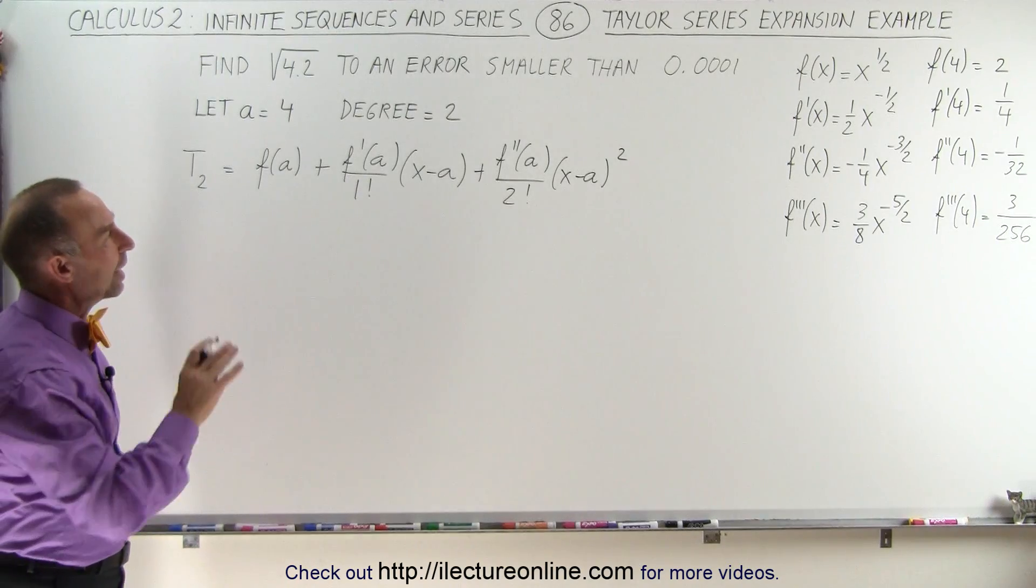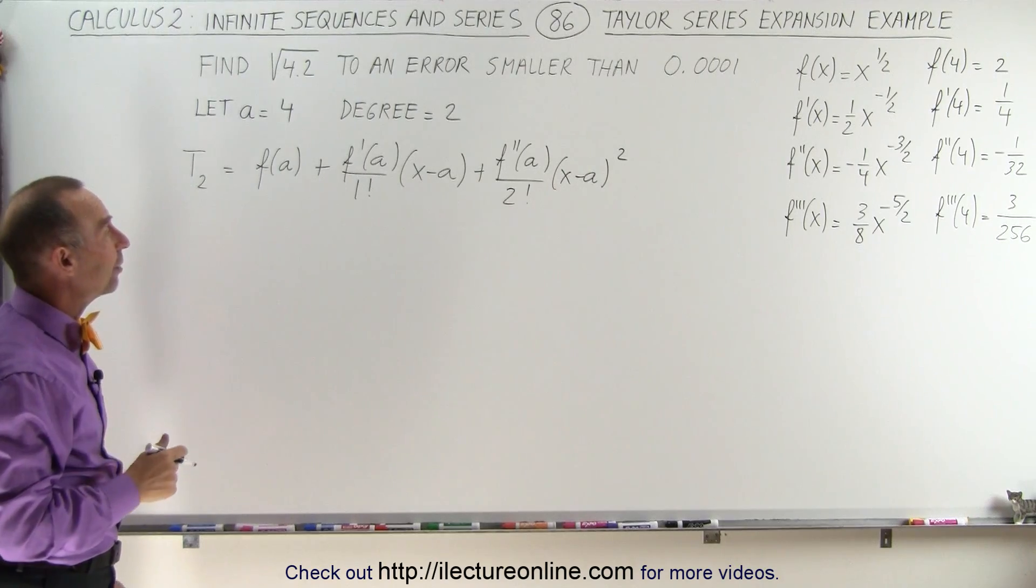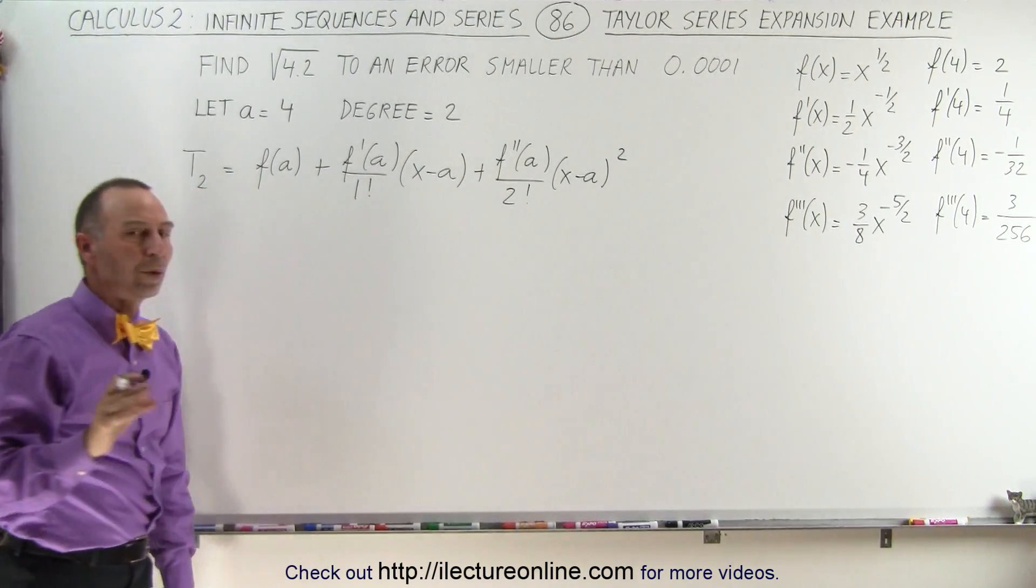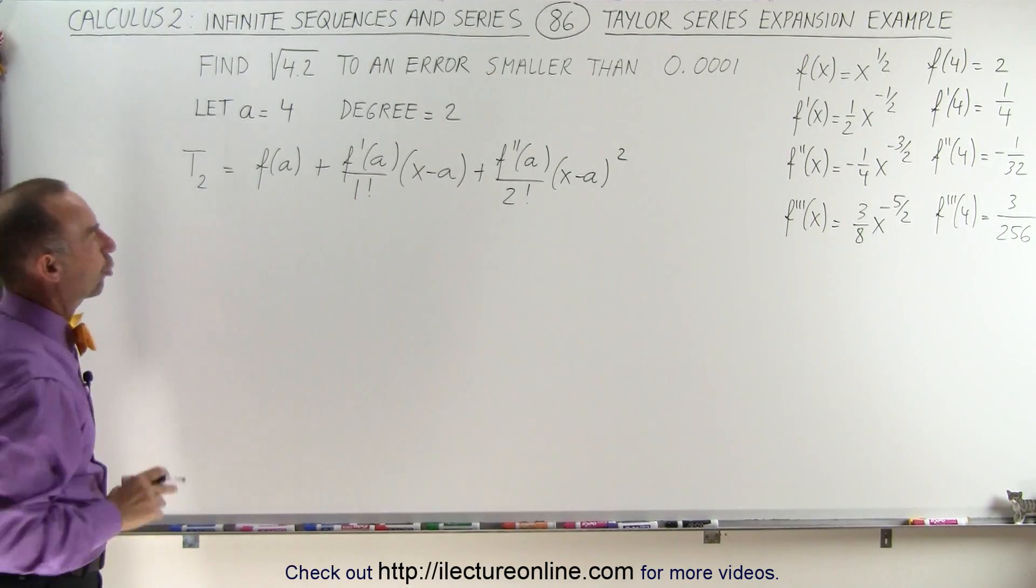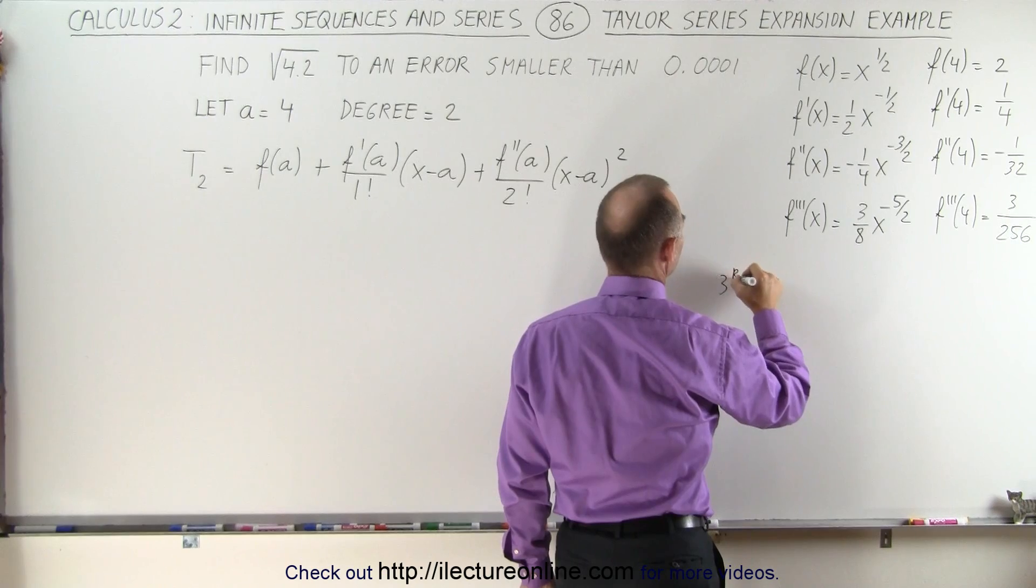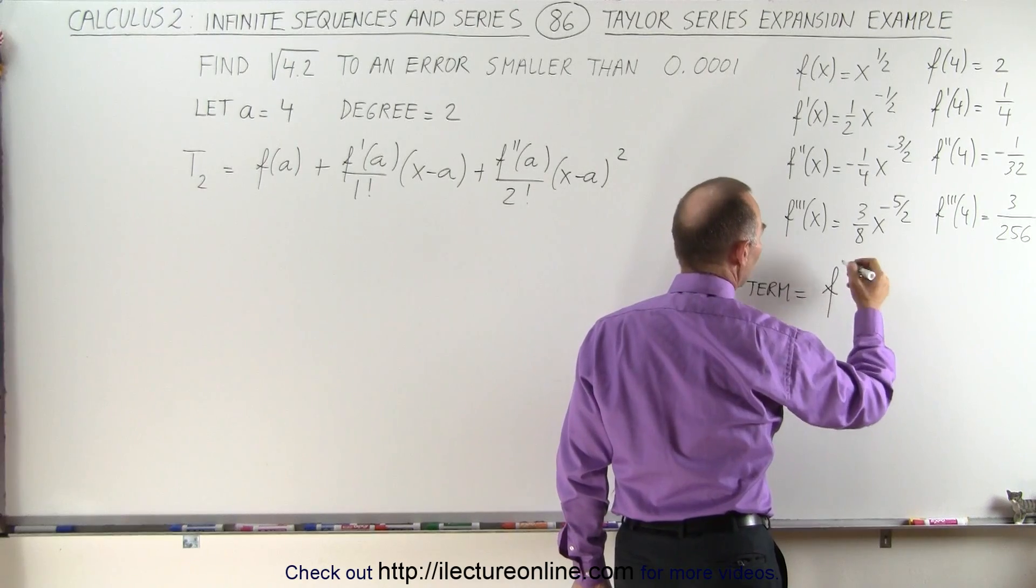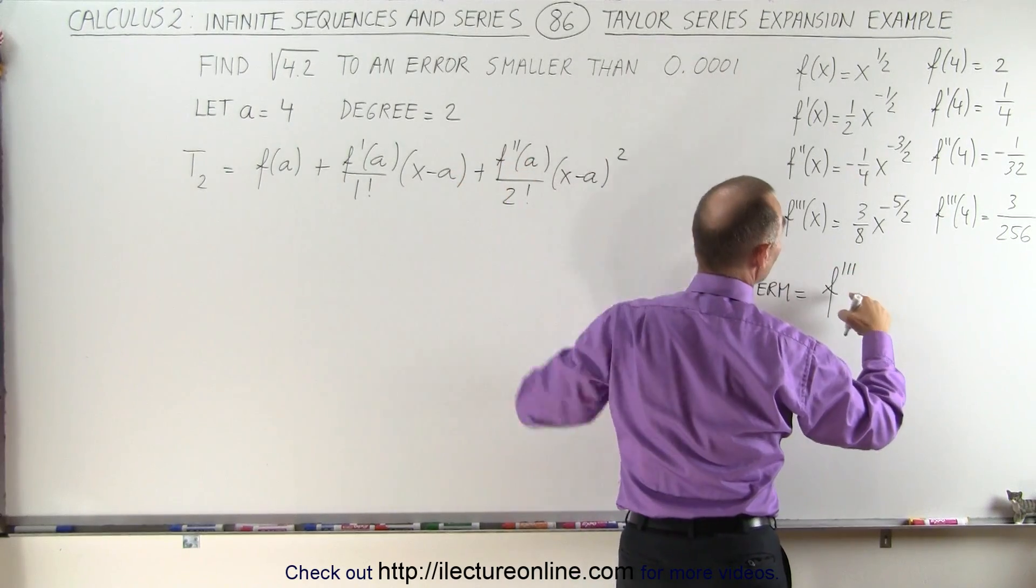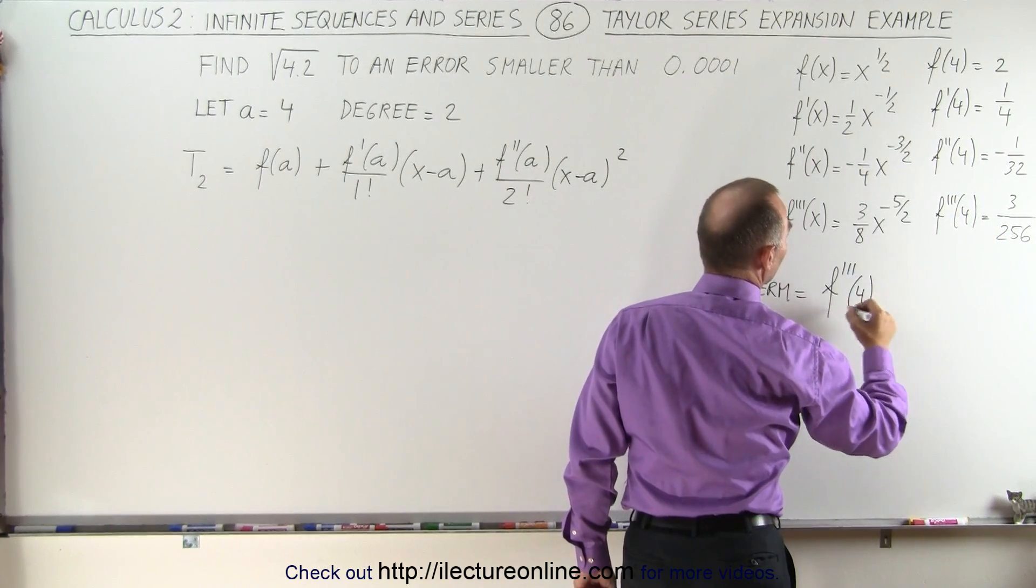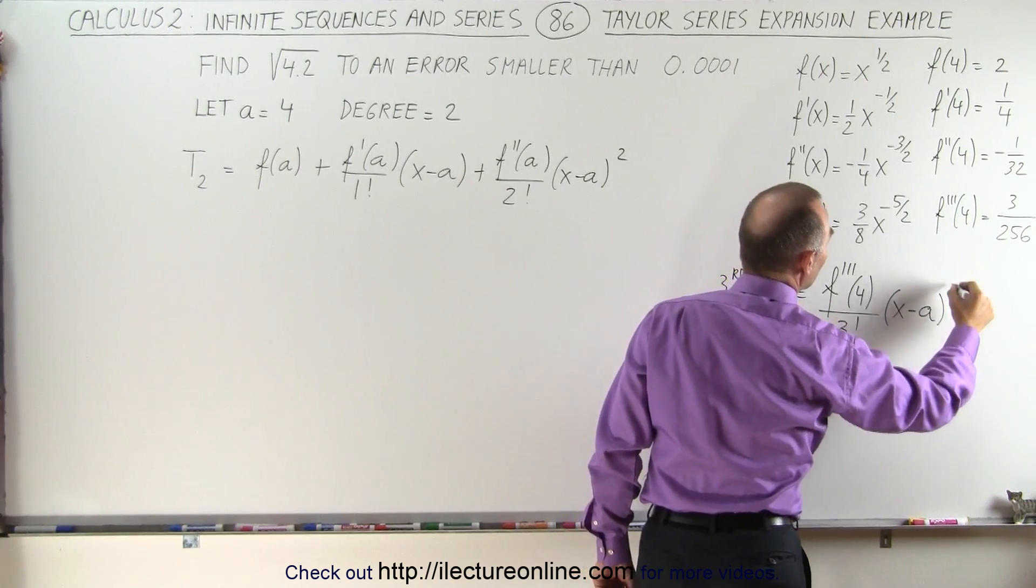Just to make sure that I'm going to have a solution that has an error smaller than that, let's find the estimated error by realizing that the error of this estimation will be less than the value of the next term. The third term is going to be equal to the third derivative of the function evaluated at 4 divided by 3 factorial times x minus a to the third power.